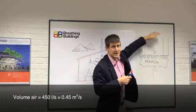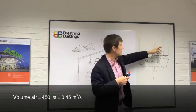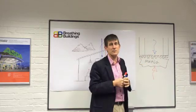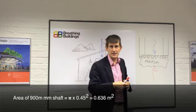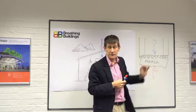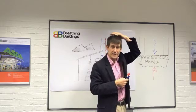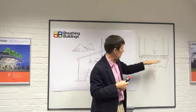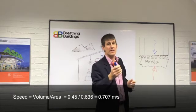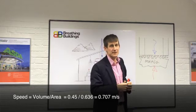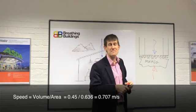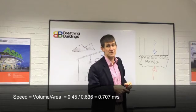450 litres per second of fresh air being delivered through a vertical duct of 900 millimetres diameter will result in an air stream of 15 degrees C on a 5 degrees C day, blown down on your head at a speed of 0.7 metres per second. Think about it — 15 degrees C being blown down at 0.7 metres per second constitutes a cold draft.